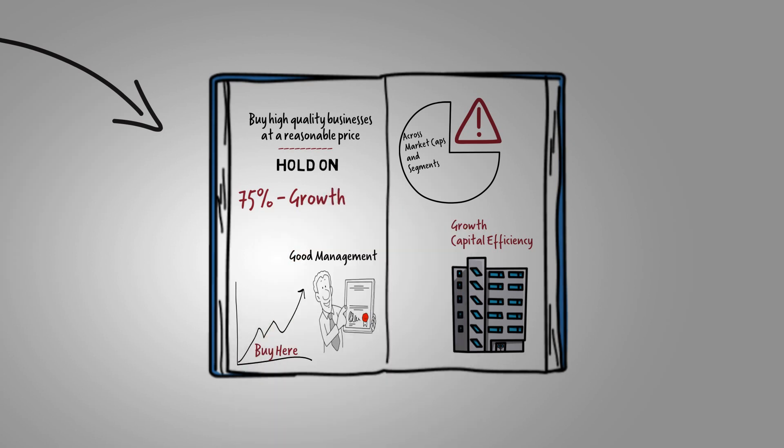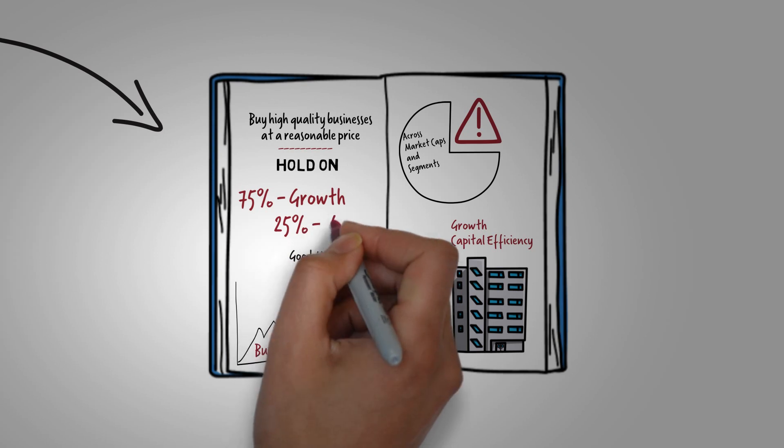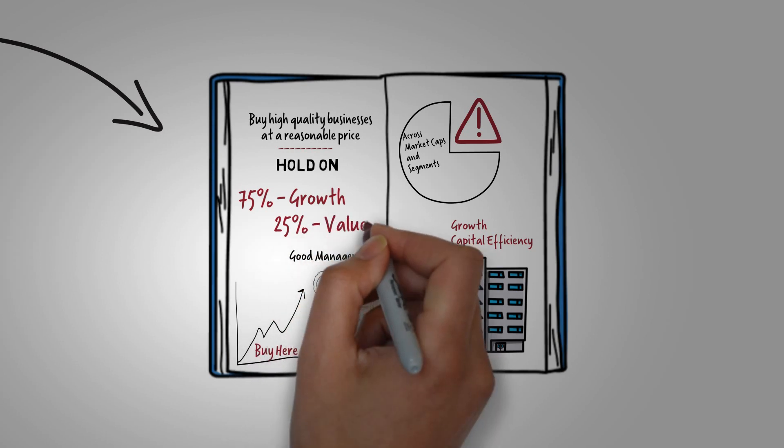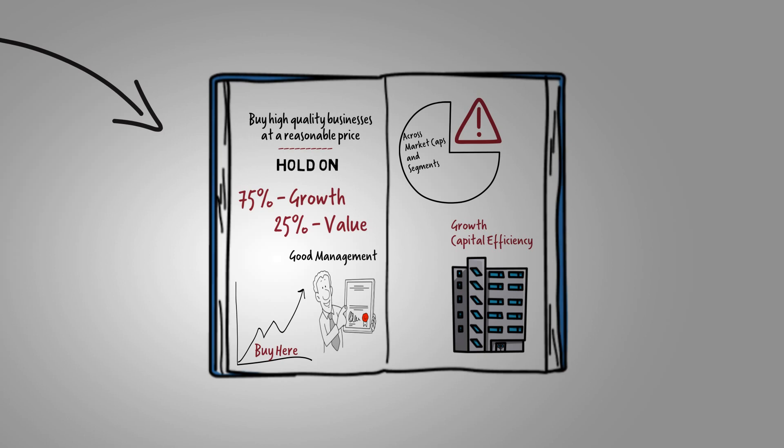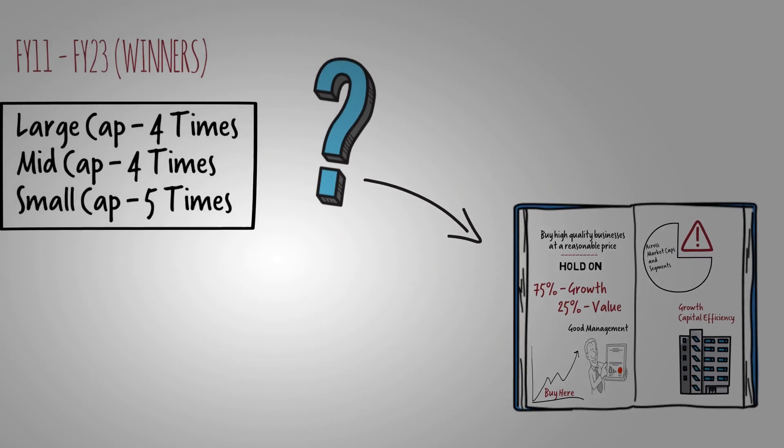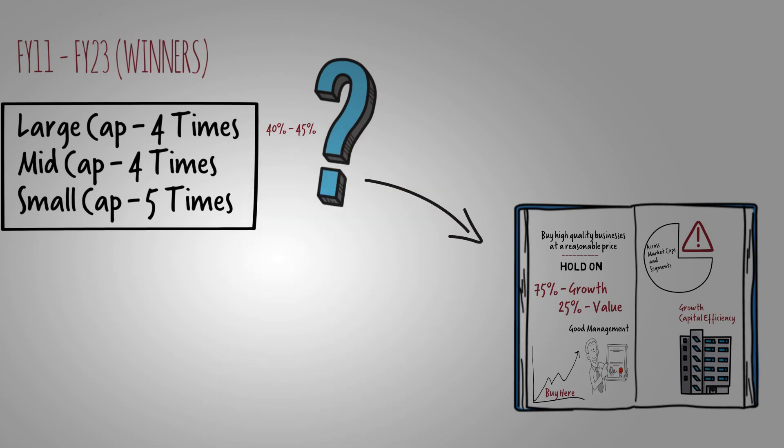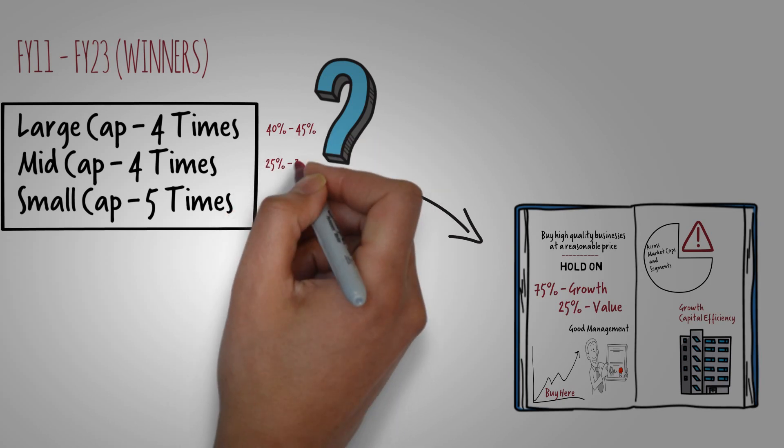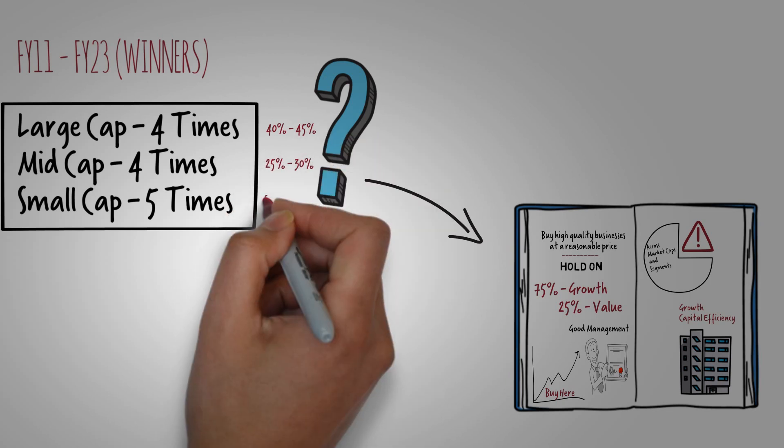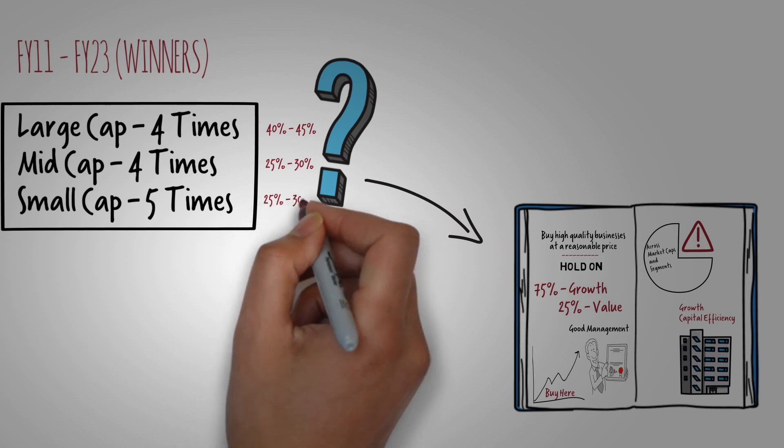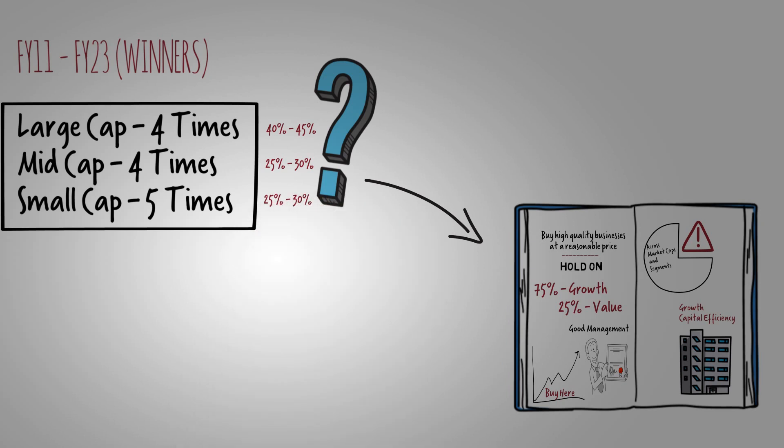The Mirai Asset Multi-Cap Fund follows a specific allocation strategy. Approximately 75% of the fund's portfolio will be tilted towards growth stocks, while the remaining 25% will focus on finding value. In terms of market allocation, the desired distribution is 40-45% in large caps, 25-30% each in mid and small caps.